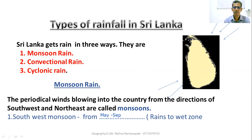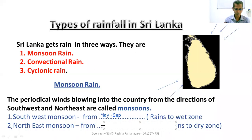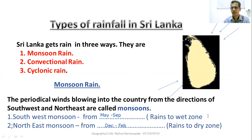The other one is the north-east monsoon, from December to February — December, January, February.